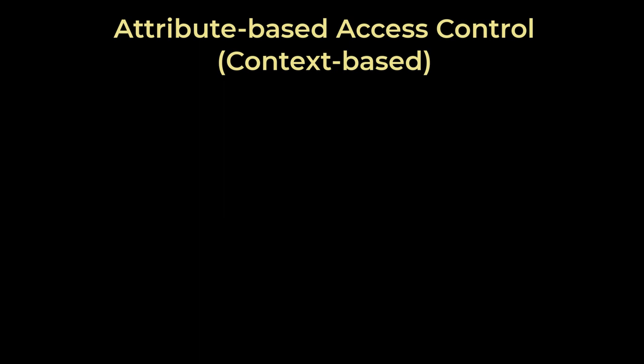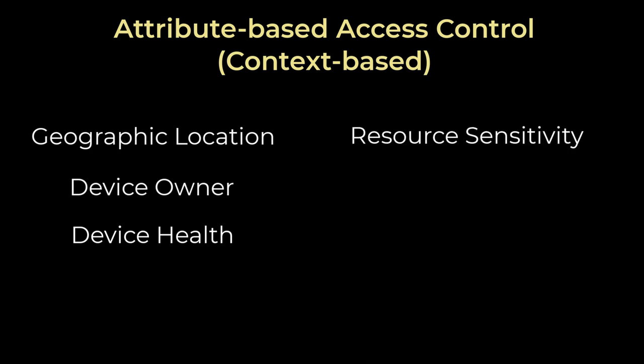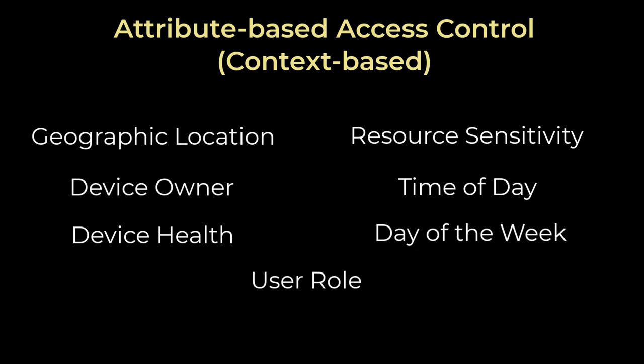Use attribute-based access. Attribute-based access control enables an organization to control the use of each cloud or on-premise resource based on a set of attributes, including the device used. Other attributes include geographic location of the device, owner of the device, health of the device — something often checked by the mobile device management solution — sensitivity of the resource to be accessed, time of day, day of the week, and user role.